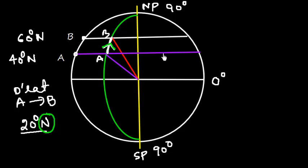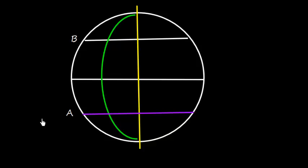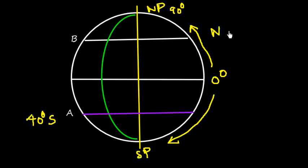If we go from B to A — that is, from 60 degrees North back to 40 degrees North — the difference in latitude is 20 degrees South, because we are traveling towards the South Pole. Now let's take another example. Suppose place A is at 40 degrees South. The equator is 0 degrees, with the South Pole below and the North Pole above, and latitudes are measured 0 to 90 degrees in each direction.